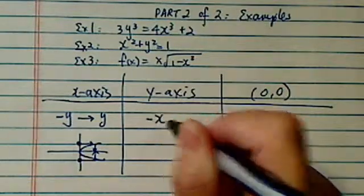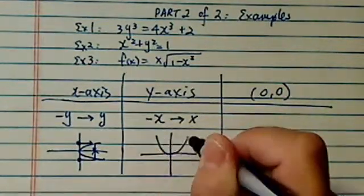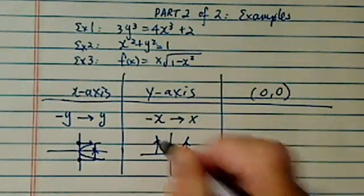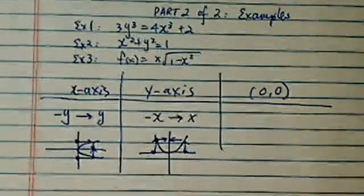On the y-axis, we're going to replace minus x with x, and graphically this is what's happening. If I take two twin values of the x-axis, do I get the same y value?